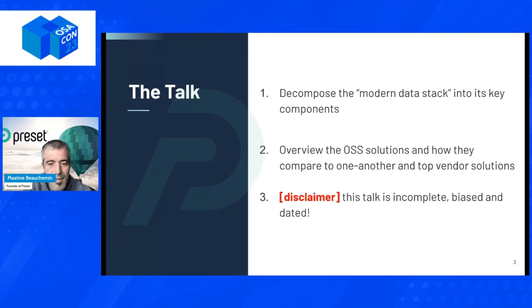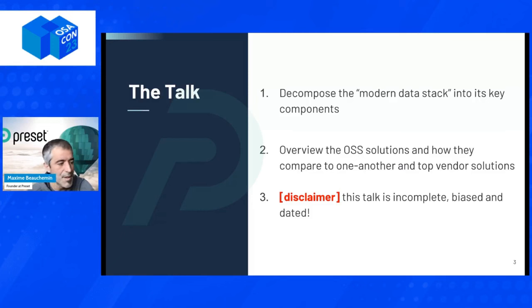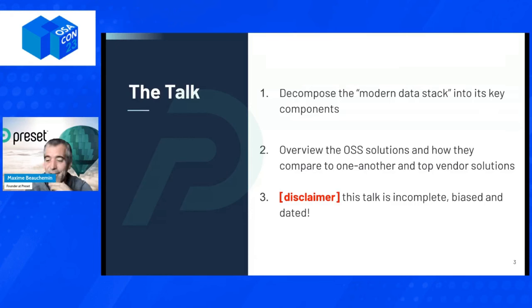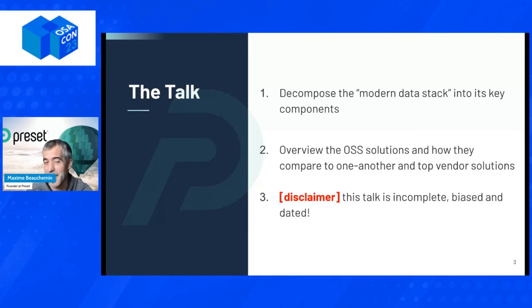What I want to do today is decompose the modern data stack and unpack it into some of its key components. For each layer, I'll review some of the open source solutions that exist and how they compare to some of the commercial vendors in the space. This is a super ambitious talk — there's a lot of layers in the stack, a lot of products, and these products are changing extremely fast. So I want to put this disclaimer saying that as much as I did some research and have been immersed in open source and data all year, I don't know everything. I apologize in advance if there are missing logos or miscategorizations, but the idea is really to give you a set of pointers to get an idea of the landscape. You should do your own research and look at some of the up-and-comers I may not have mentioned.